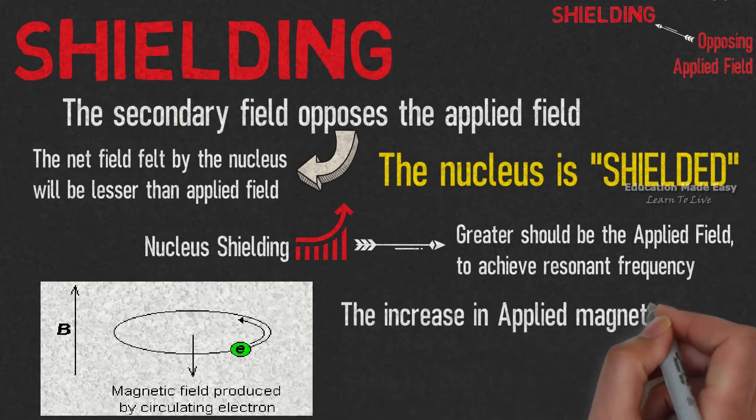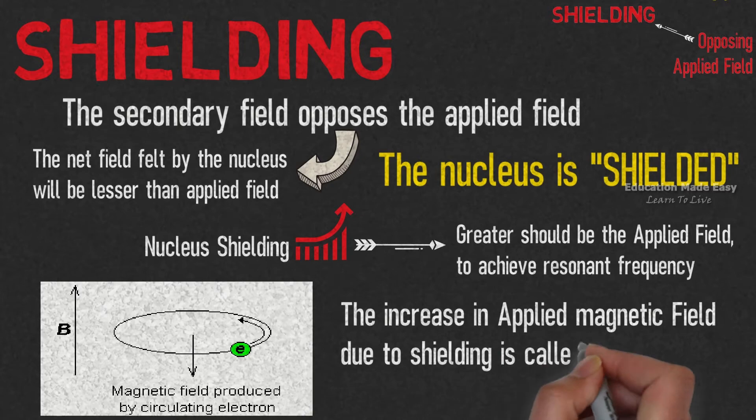This increase in applied magnetic field due to shielding effect is called upfield or diamagnetic shift.